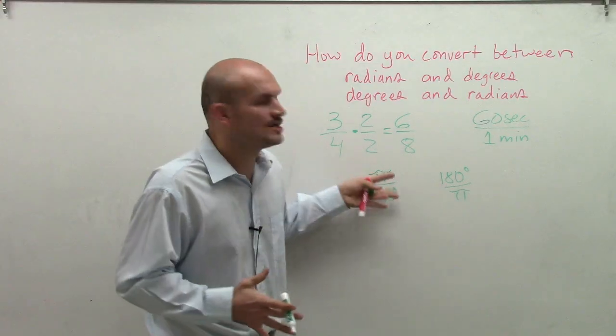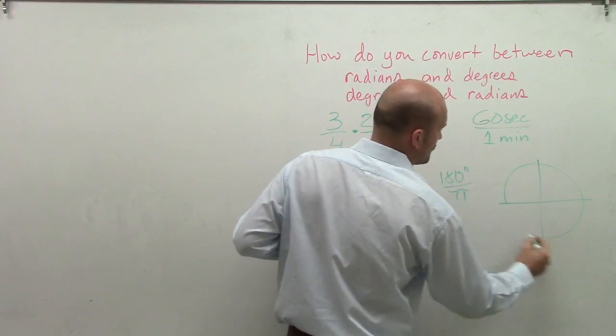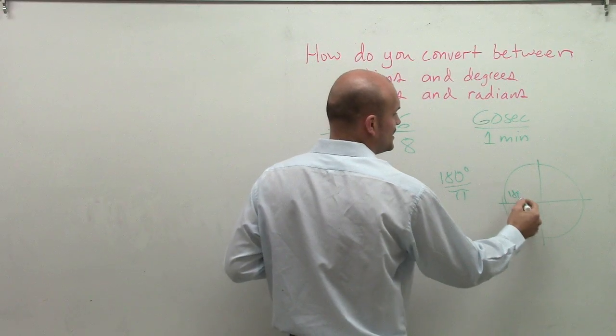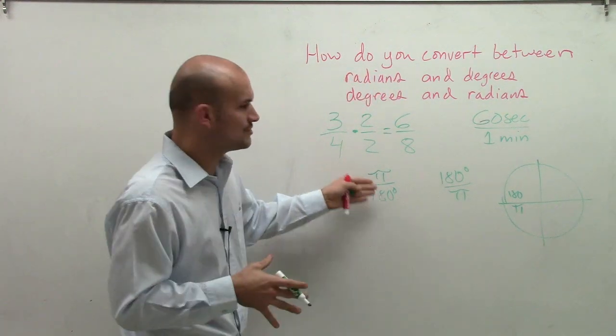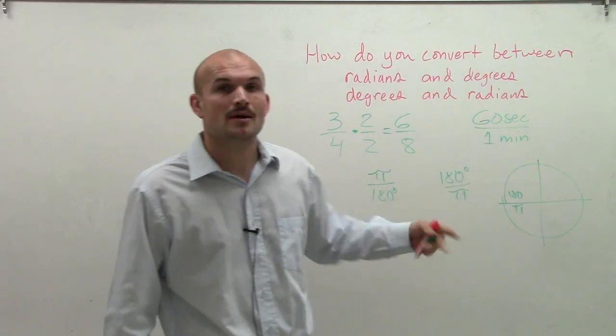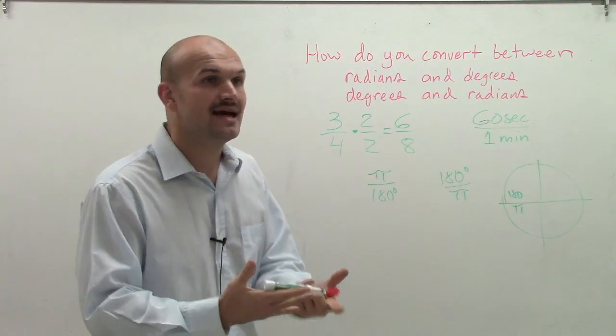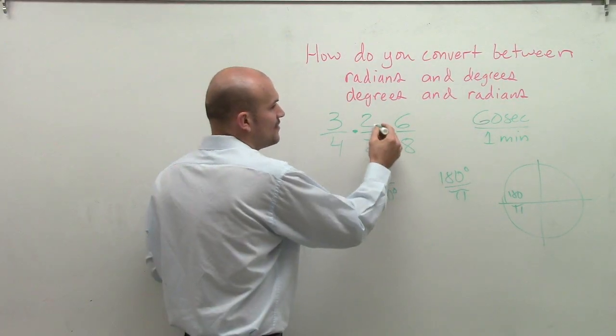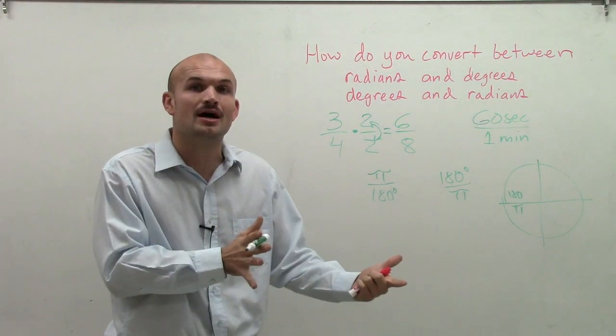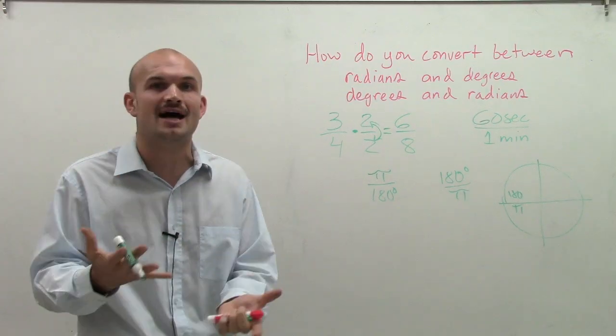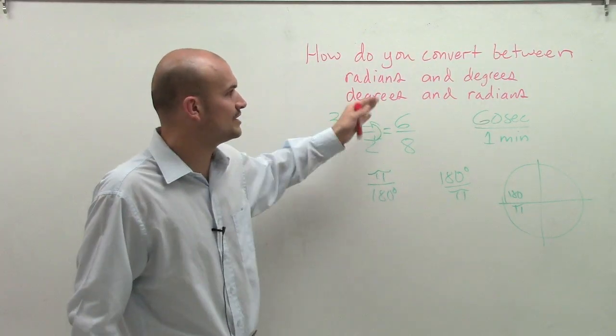The important thing to remember is these are equivalent to each other. These are the exact same measure. Because remember, if we looked at our circle, halfway around a circle is 180 degrees and it's also π radians. So since these are equivalent to each other, we can multiply this ratio by an angle that's in degrees or by an angle that's in radians. We're not going to change that value because the numerator and denominator are equal in value. Just because they're in different units, it's OK because they're equal in value.